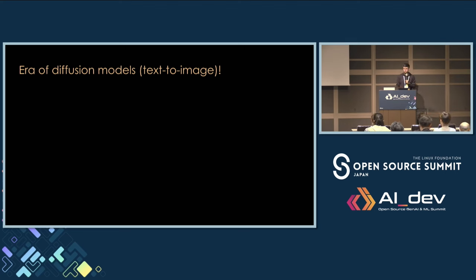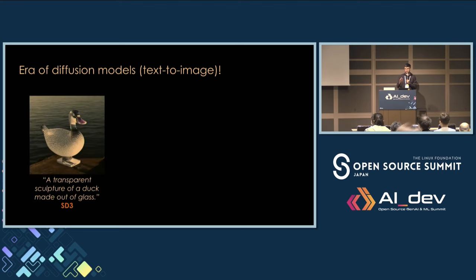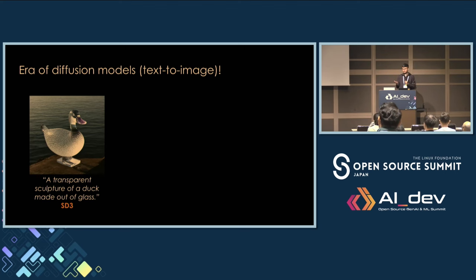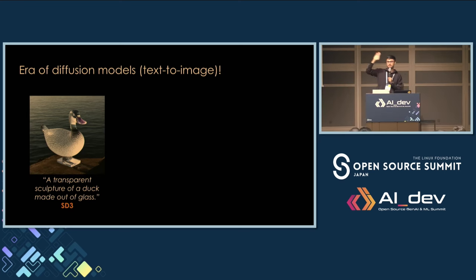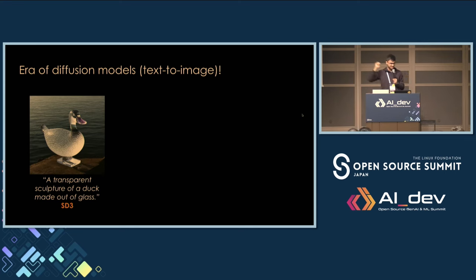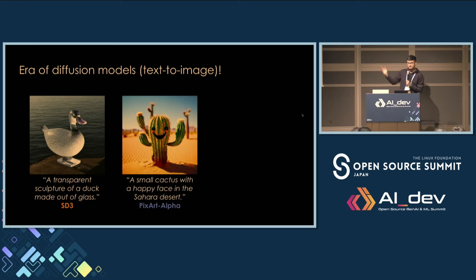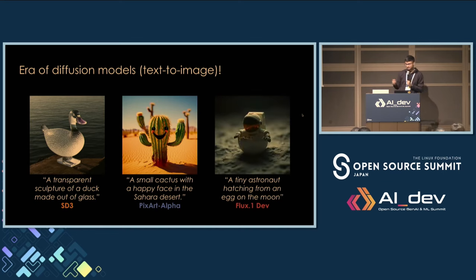I entered the area of text-to-image diffusion models. I hope everyone has heard of things like DALL-E 3 and Midjourney — can I get a show of hands? Even things like Sora. That's quite a good number. With Stable Diffusion 3 we've got phenomenal results, then we have Pixart Alpha, and then we have Flux.